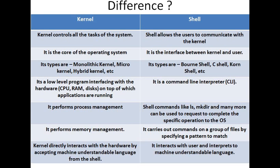The kernel performs memory management and process management. Shell commands like ls, mkdir, and other Unix commands — for example, ls lists files and directories — are used to request specific operations from the operating system, which in turn requests the kernel to run those commands. Finally, the kernel directly interacts with the hardware by accepting machine-understandable language from the shell, while the shell interacts with the user and interprets commands into machine-understandable language. The common target is that the user's commands are executed without any error.